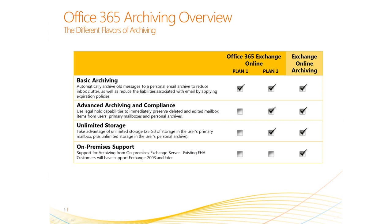There are three different flavors of archiving with Office 365. The first is Exchange Online Plan 1, which includes basic archiving for customers that want to store old messages to a personal email archive to reduce email clutter. Exchange Online Plan 2 as well as Exchange Online Archiving have richer functionality around advanced archiving and compliance, as well as unlimited storage to provide more than 25 gigs of storage for end users. Exchange Online Archiving additionally has on-premises support for organizations that want a cloud-based email archive with an on-premises primary mailbox.